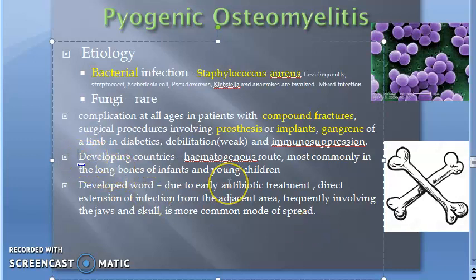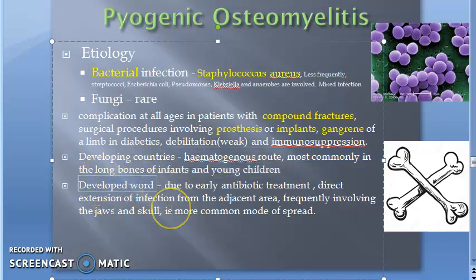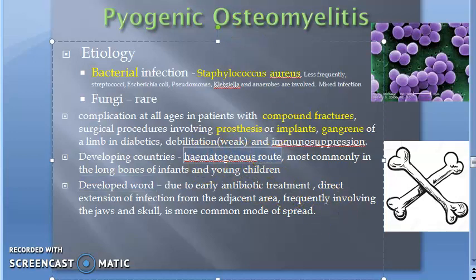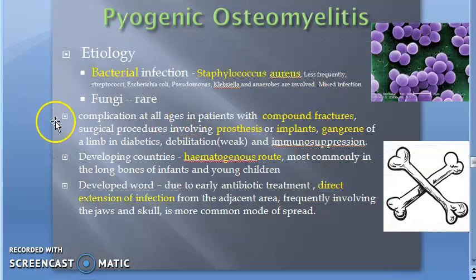In developing countries, it is usually a hematogenous route — through the blood it reaches the bone — and it mainly affects children. In developed countries like America, early antibiotic treatment makes it difficult for bacteria to reach the bone via blood; however, direct extension of infection from an adjacent area is possible. So both hematogenous spread and direct extension of infection are recognized routes.